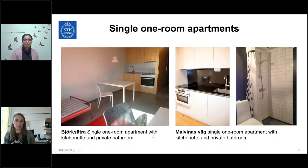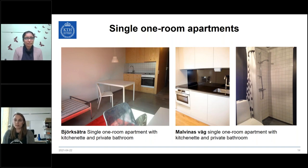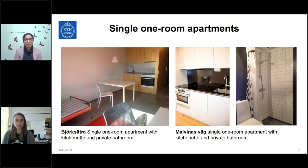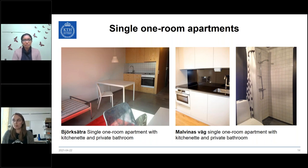Single one-room apartments are also available. Björksätra is located in the southwest of Stockholm, close to the water and forest, and offers single one-room apartments with a larger private bathroom and kitchenette. Malvinas väg also offers single apartments with a private bathroom and kitchenette for sole use.